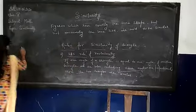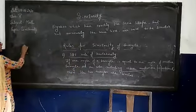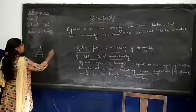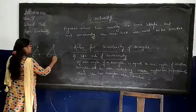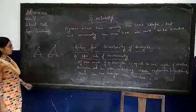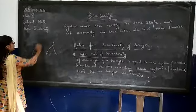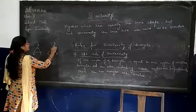Imagine say triangle ABC and say triangle PQR. Now according to this rule, angle A is equal to angle P.